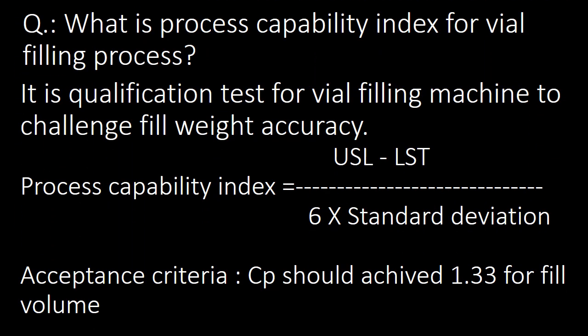This is an important question for personnel involved in vial filling machine qualification. What is the process capability index for the vial filling process? It is a qualification test to challenge fill weight accuracy. The process capability index is calculated as: Cp = (Upper Set Limit − Lower Set Limit) / (6 × Standard Deviation). The acceptance criteria is Cp ≥ 1.33 for fill volume.